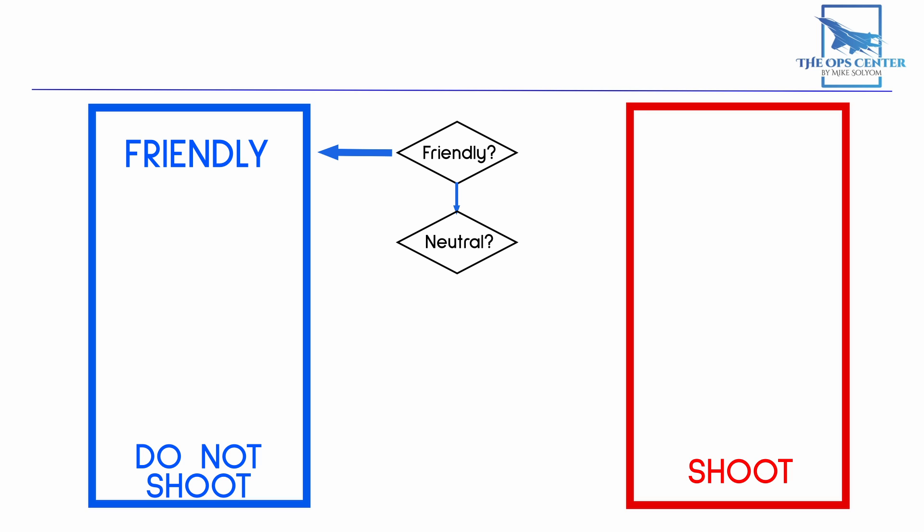This could very well be a humanitarian aid delivery or a non-aligned nations aircraft accidentally straying into the combat area. Either way, neutral aircraft oftentimes will have a transponder running to let everyone know who they are. This would most likely be a mode 3A transponder.